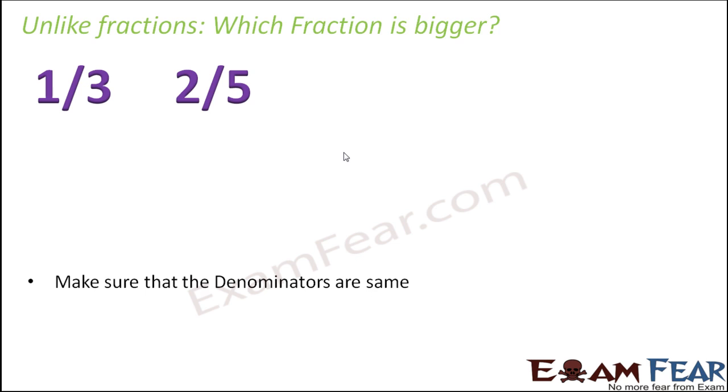So our first step would be to make sure that the denominators become same. You might ask that the denominators are not same, how do we ensure that they become same? Of course we can do something about it. We can convert it to equivalent fraction such that both of their equivalent fractions have the same denominator. Now how do we convert them into equivalent fractions?